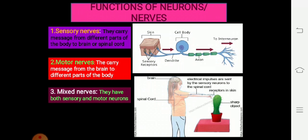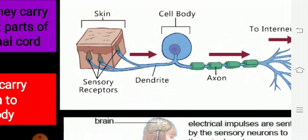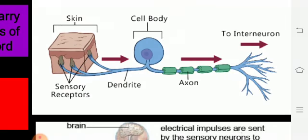Now let's look at the functions of all three neurons. First, the function of sensory nerves: sensory nerves carry messages from different parts of the body — such as skin, eyes, ear, nose, tongue, or internal organs — to the brain or spinal cord. The sensory receptors, meaning sensory neurons, are embedded in our skin. When we touch anything hot, cold, spicy, or sharp, the sensory neuron carries the message to the dendrite, then to the cell body, then through the axon, then to the interneuron — or mixed neuron — and after that it goes to the spinal cord or brain. This is how sensory nerves work.